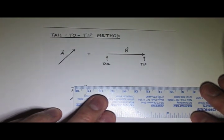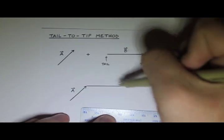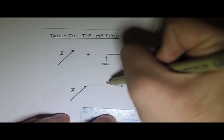So you take the tail of B and you put the arrow at the tip of A. So I'm going to redraw B right here. And now, there's B.